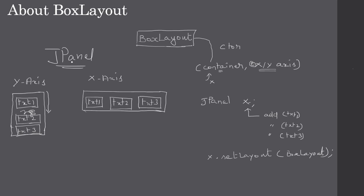Simply put: you create a JPanel, then create a Box Layout and assign it to the container, then start adding controls. If the Box Layout is set to span in the X-axis direction, controls are placed left to right. If you specify Y-axis instead, each control is placed below the previous one.